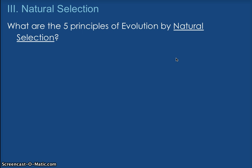We already talked about natural selection being organisms with traits that are best suited to their environment are more likely to survive and reproduce — meaning if they can blend in or anything like that, they live and they have offspring. So there are five principles of evolution about natural selection. Principles are kind of like saying there are five laws.